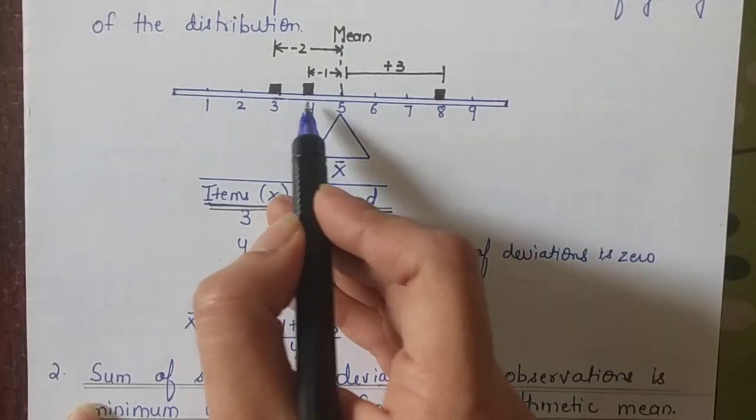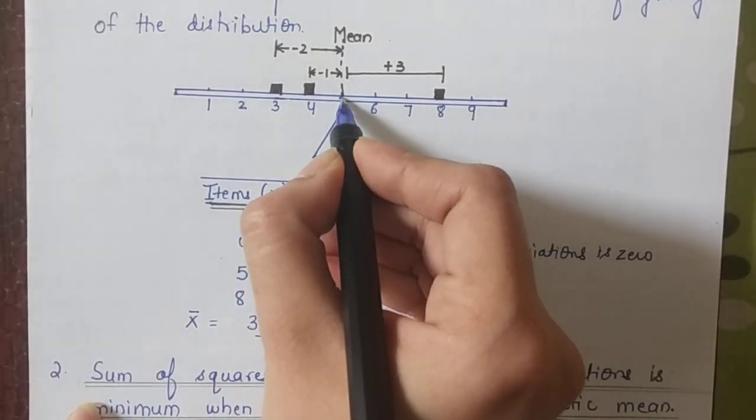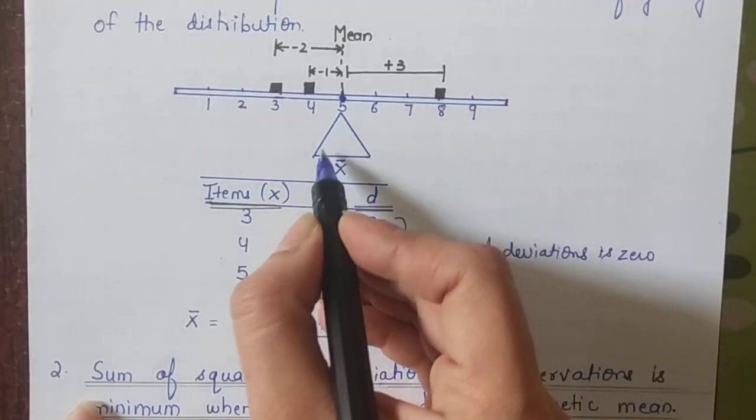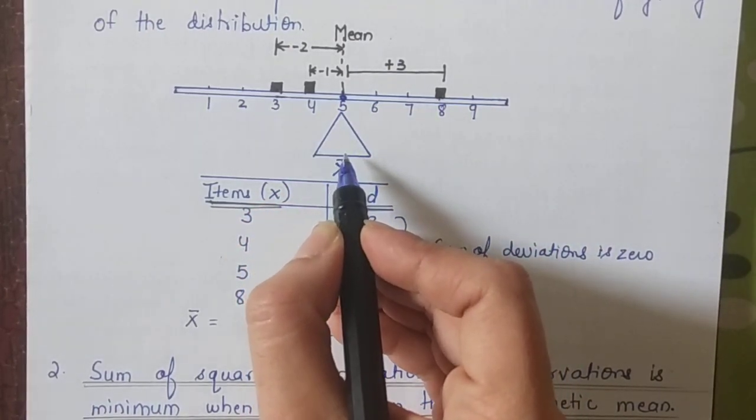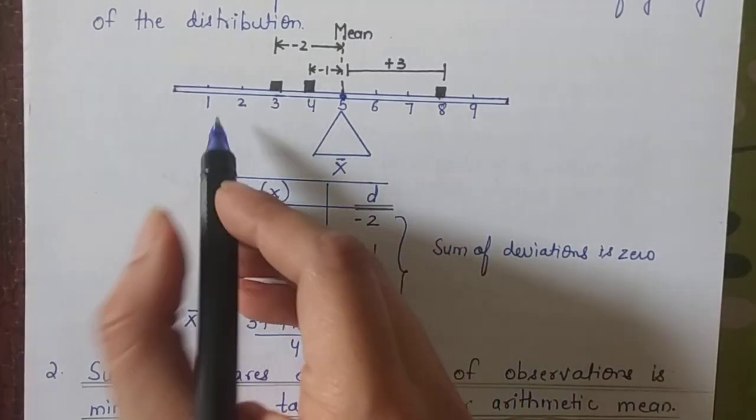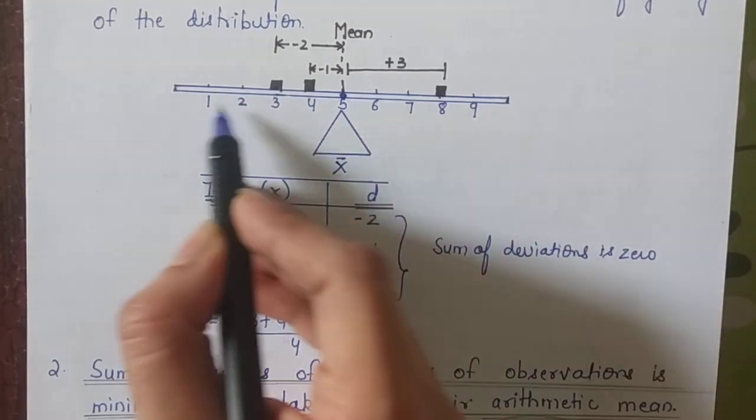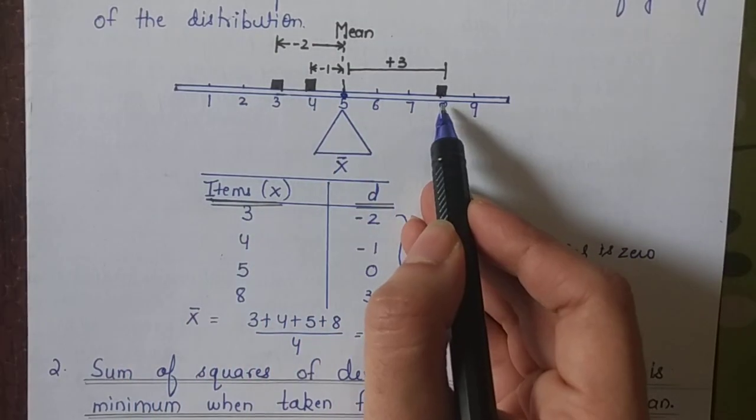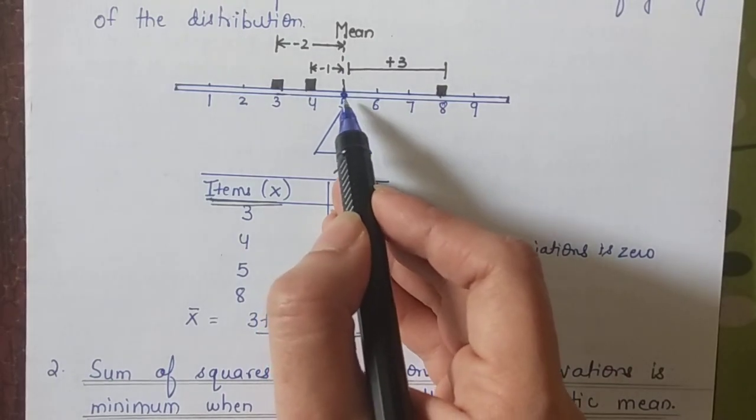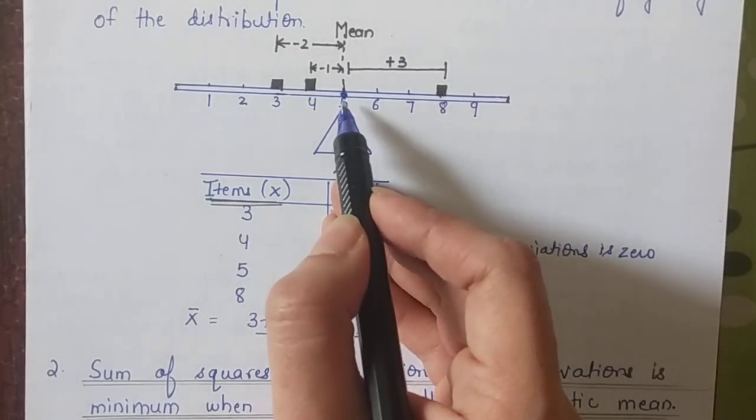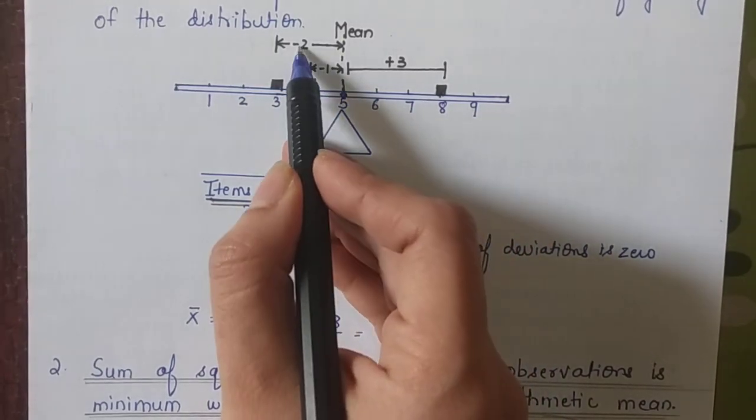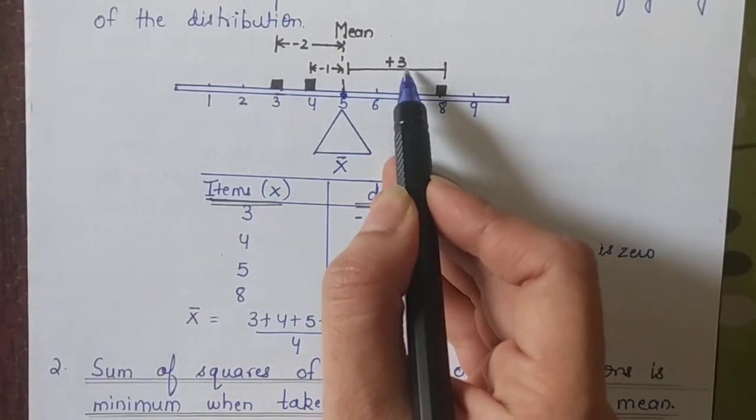If you check on the number line, my numbers were 3, 4, 5 and 8. When I calculated their mean it came out to be 5. So I have put up a triangle just to explain you that this is the center of gravity or you can say the point of balance. This number line is balancing on this 5. So the total of these deviations, that is minus 2 plus minus 1 plus 3 will be 0.